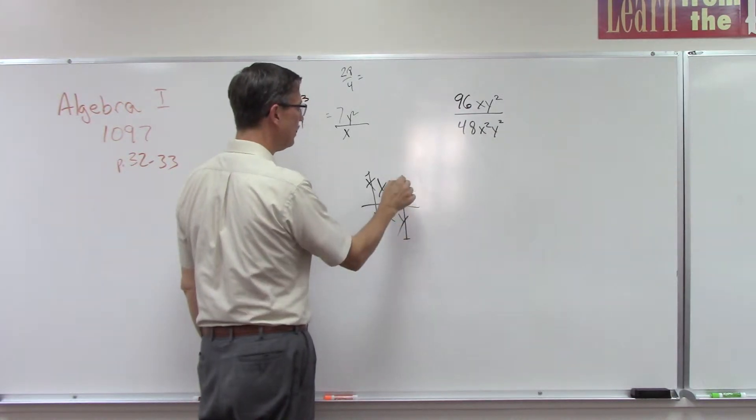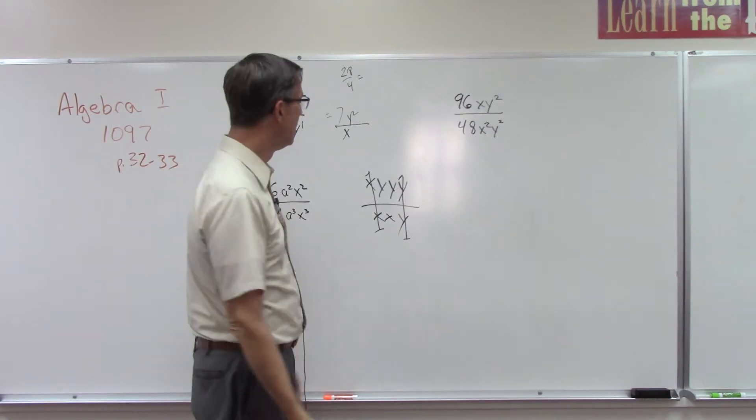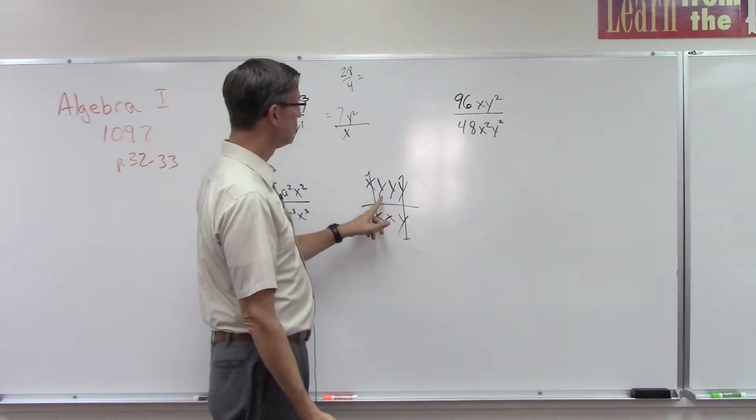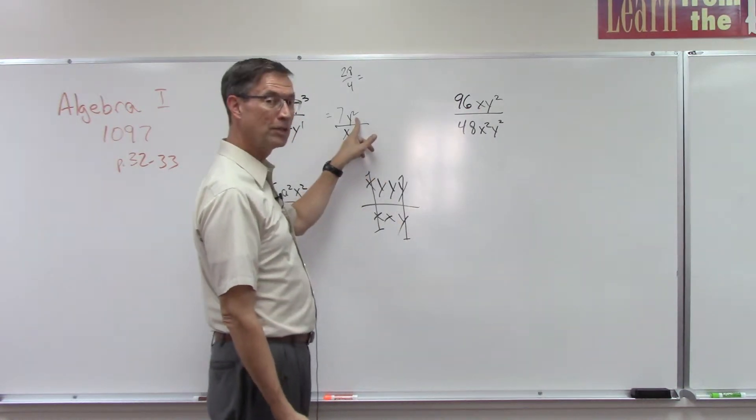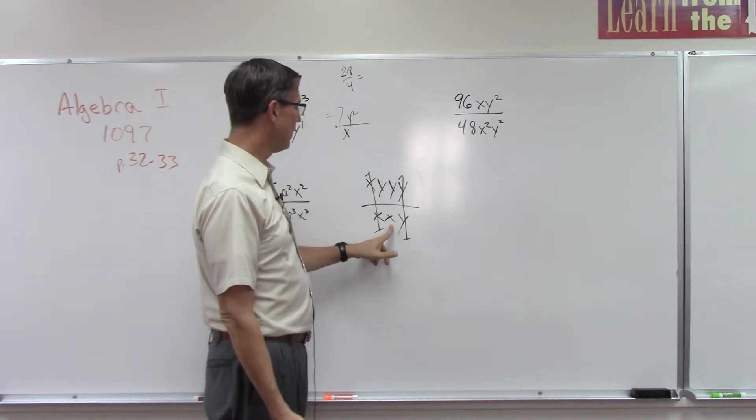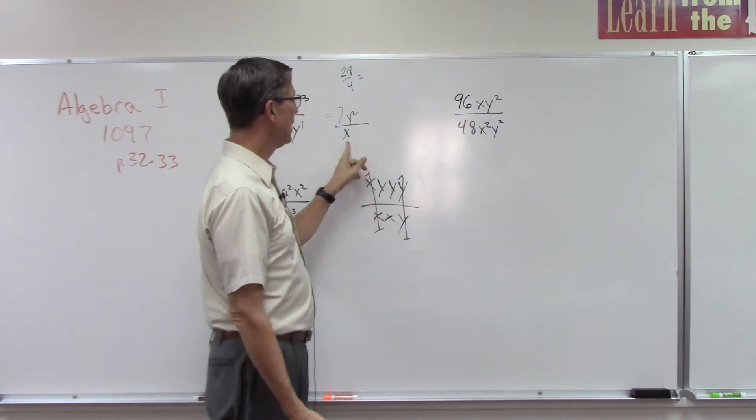Let's see what we have left. I have two y's and they're both on the top, so y times y is y squared. What do I have left on the bottom? I just have an x, because these cancel out. So I have an x on the bottom.